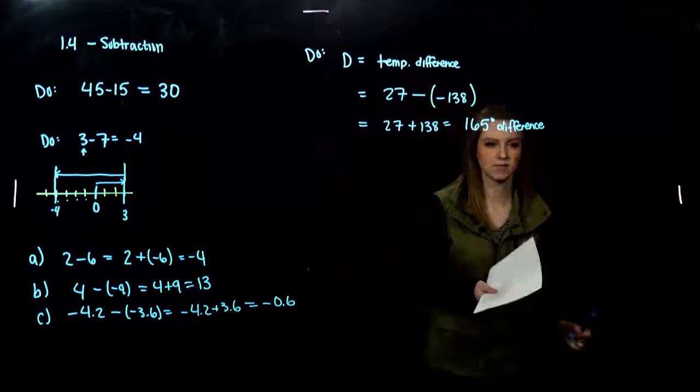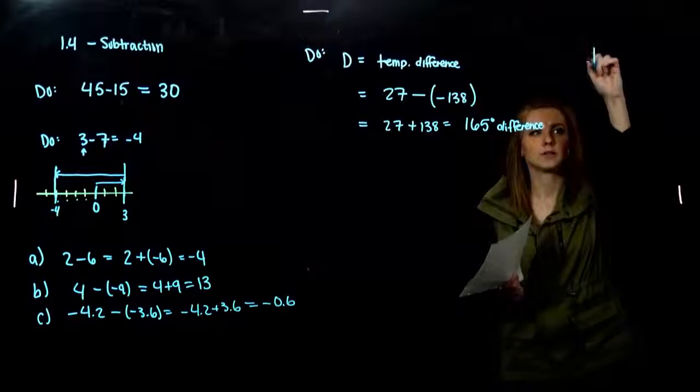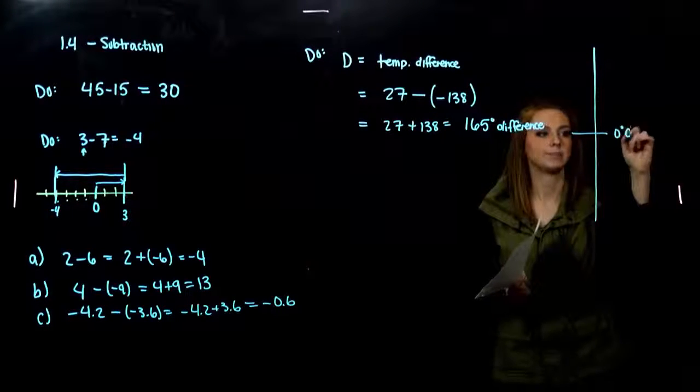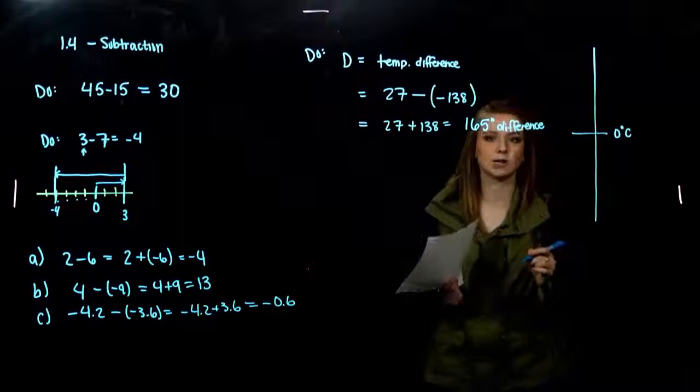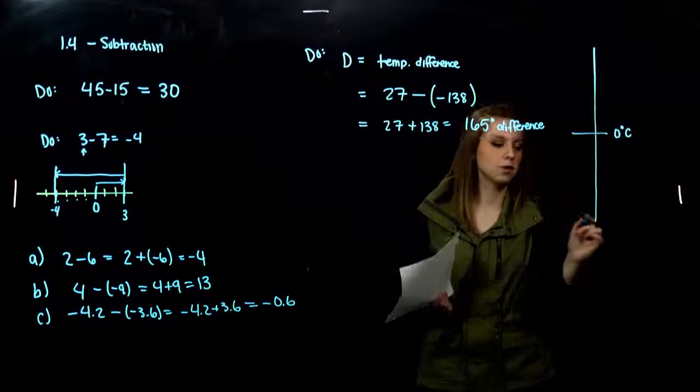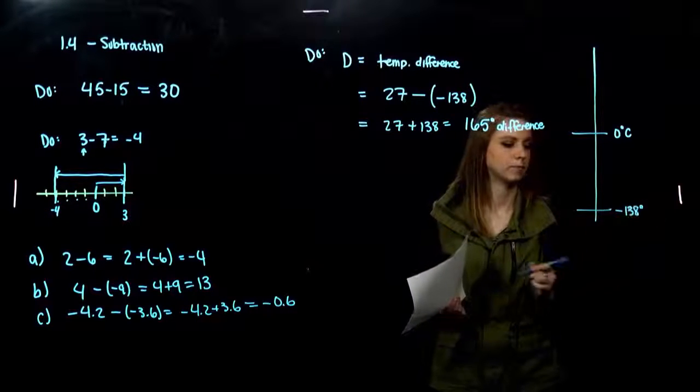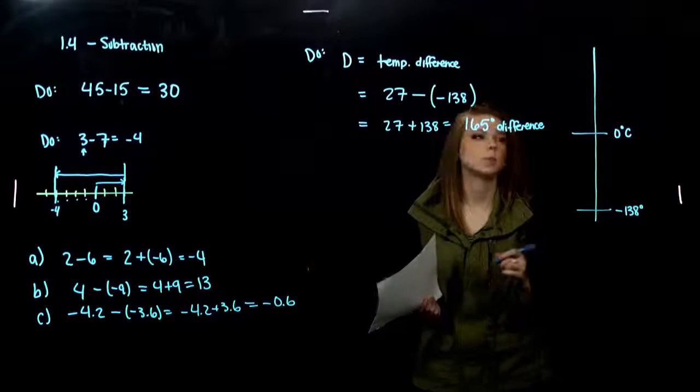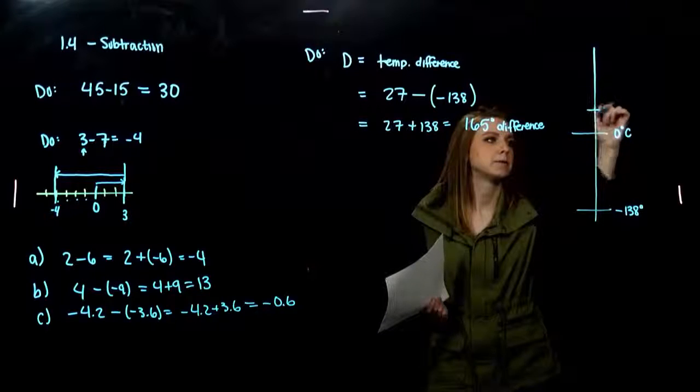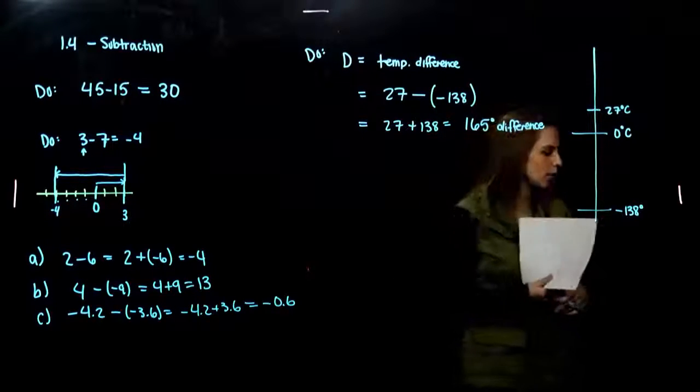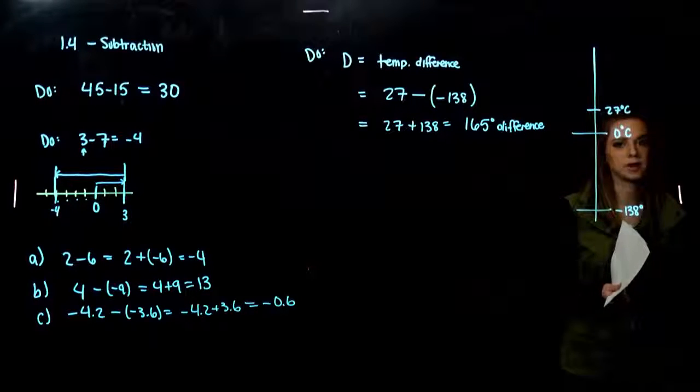I think for some of these it's helpful to draw a picture as well. So, here if I have my temperature gauge, here's zero degrees Celsius. Negative 138 is all the way down here. And, 27 is maybe around here.